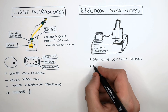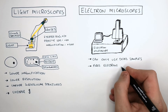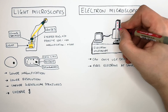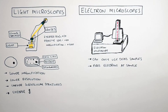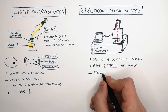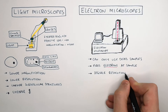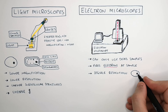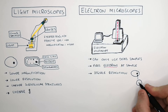The microscope fires electrons directly at the sample. The electron microscope image has a much higher resolution and a much higher magnification than a light microscope.